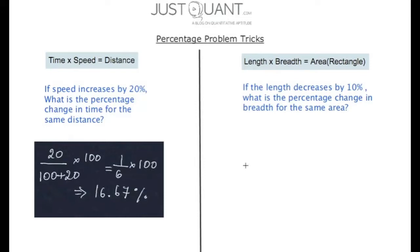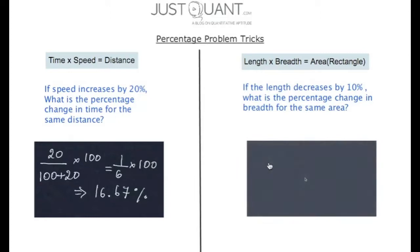Since the length decreases and the area remains the same, the breadth increases by 10/(100-10) × 100%, which is 1/9 × 100%, or 11.11%.